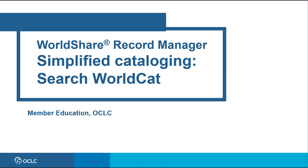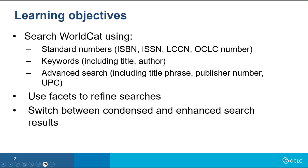In this video, you'll learn about searching WorldCat using the simplified cataloging role in WorldShare Record Manager. After watching this video, you should be able to search WorldCat using standard numbers such as ISBN and ISSN, keywords such as title and author, and you should also be able to do an advanced search including title phrase searches, publisher numbers, and universal product codes. You should be able to use facets to refine searches and switch between the condensed and enhanced view of search results.